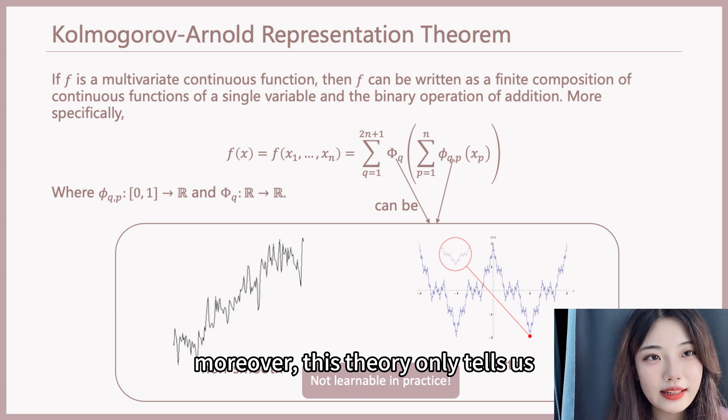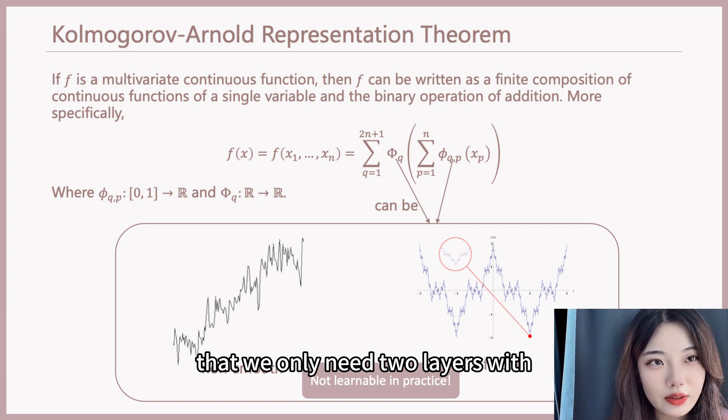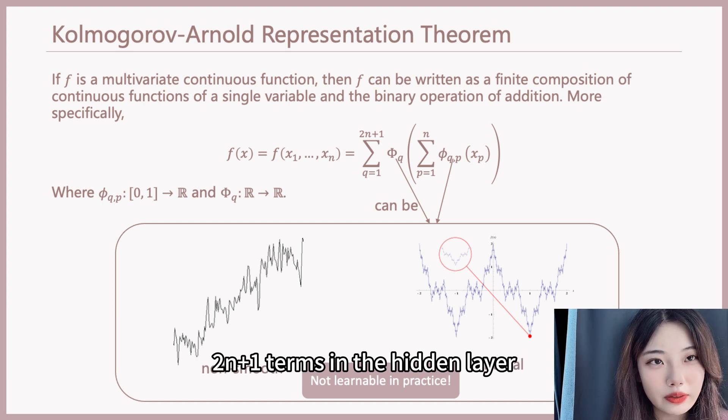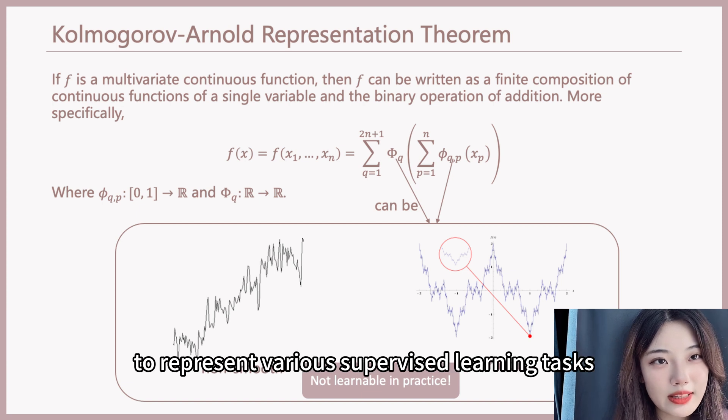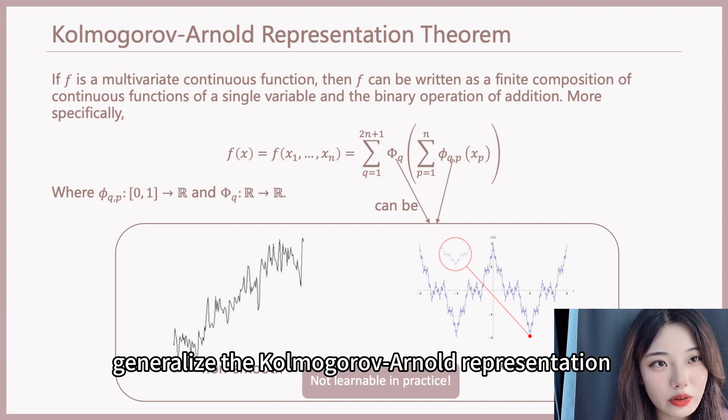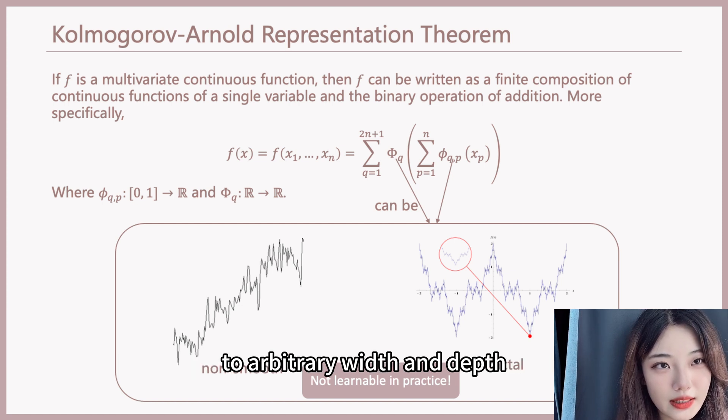Moreover, this theorem only tells us that we only need two layers with 2n plus 1 terms in the hidden layer to represent various supervised learning tasks. Maybe we can try to generalize the Kolmogorov-Arnold representation to arbitrary width and steps.